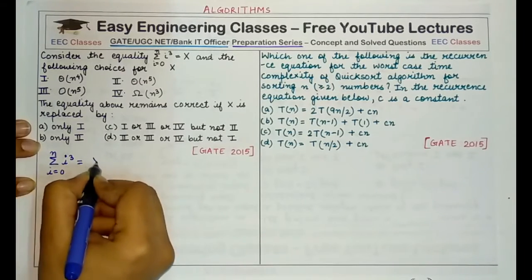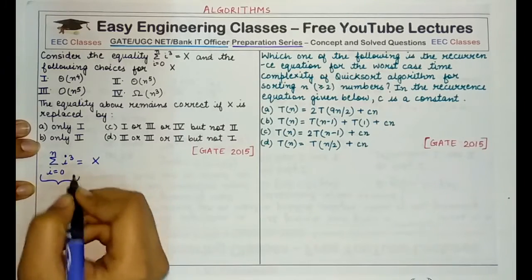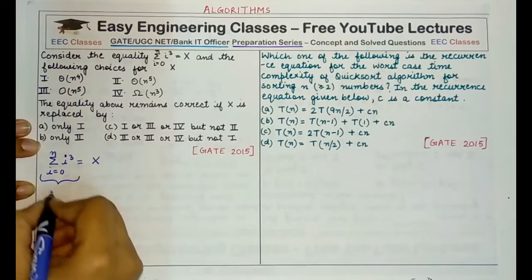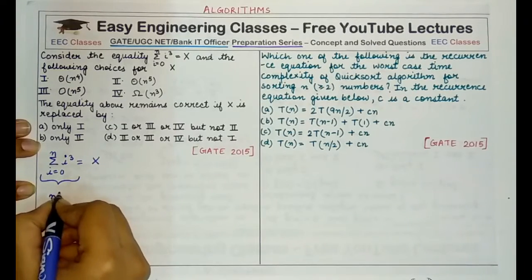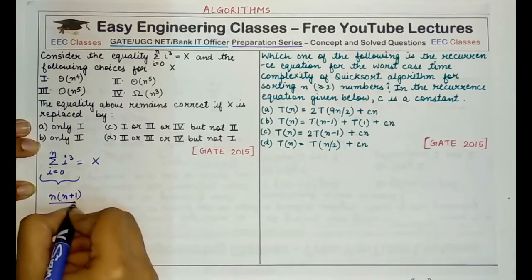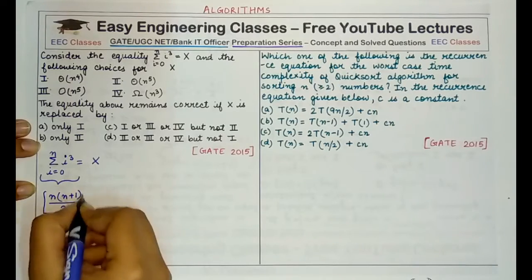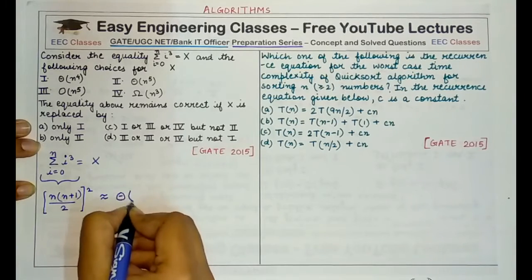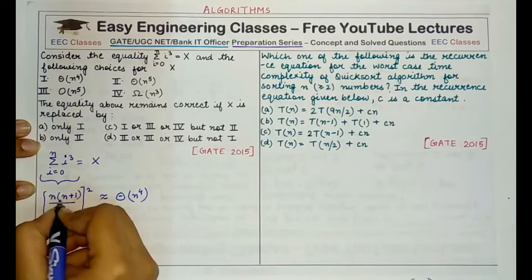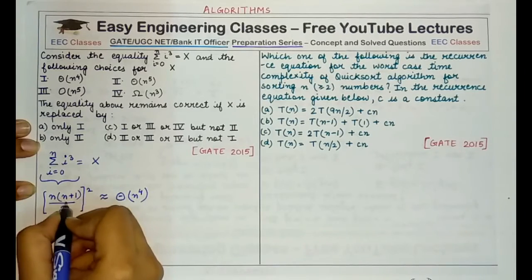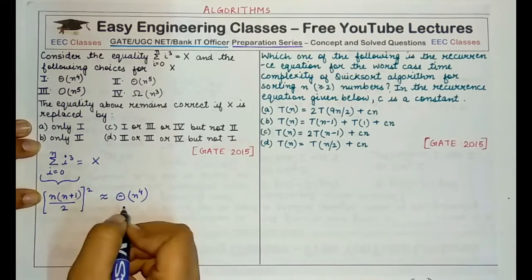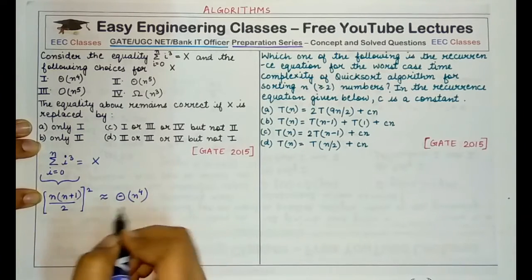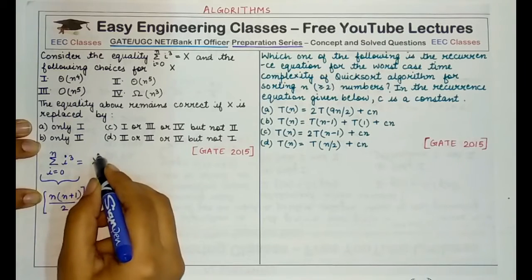You must remember that the sum of the cubes of first n natural numbers is equal to n multiplied by n plus 1 divided by 2 whole square. This would come out to be theta of n raised to power 4 because this is n square, this would be n square, n square multiplied by n square would give you a bound of theta of n raised to power 4. So if this is equal to some value x, then what can be the values that can be present in place of x?